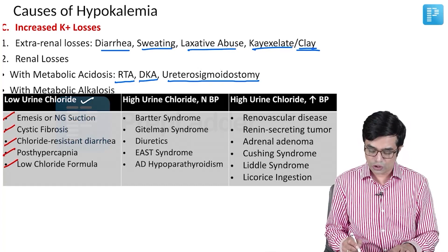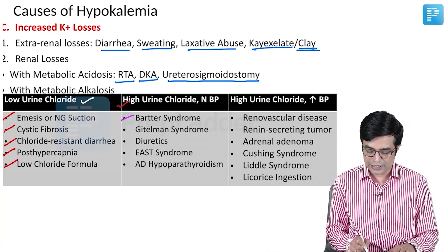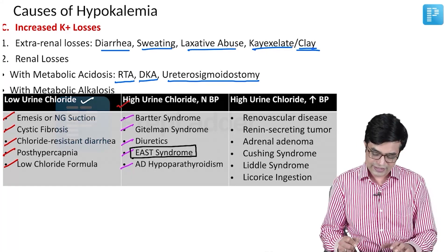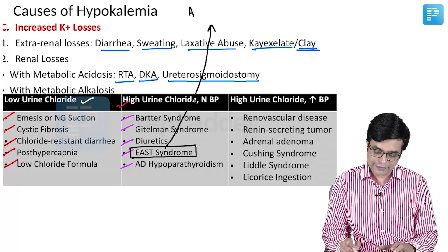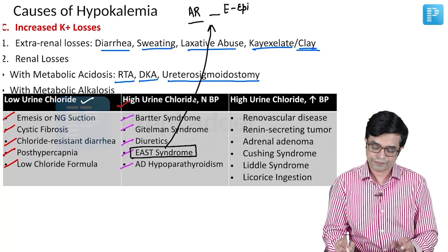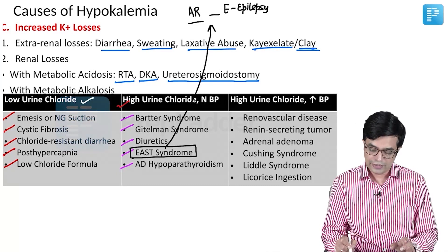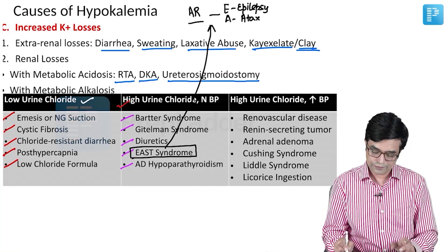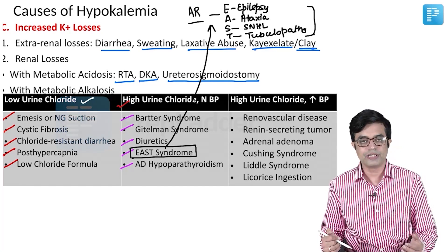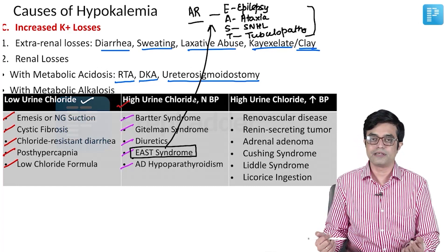Second category is high urine chloride with normal BP — seen in Bartter syndrome, Gitelman syndrome, diuretic use, EAST syndrome, and autosomal dominant hypoparathyroidism. EAST syndrome is an autosomal recessive condition with four components: E — epilepsy, A — ataxia, S — sensorineural hearing loss, T — tubular disorder (tubulopathy). EAST syndrome presents with high urinary chloride, normal BP, and hypokalemia.